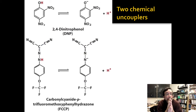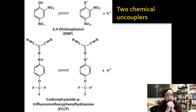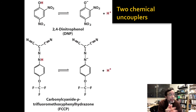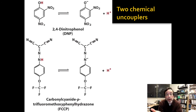DNP is 2,4-dinitrophenol. It turns out it is hydrophobic enough that when it binds a proton, it becomes more hydrophobic, so it's able to cross the membrane and then release the proton where it's more energetically stable. FCCP is another example — notice how it looks similar to DNP and has the same kind of charge pattern. When it's deprotonated it's charged; when it's protonated it's uncharged, and that helps it be more hydrophobic. The common characteristic of uncouplers is that they're both hydrophobic and proton-accepting.